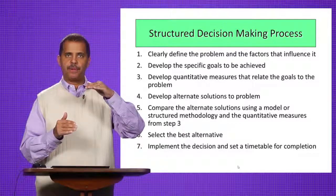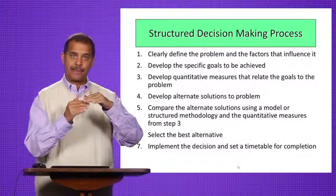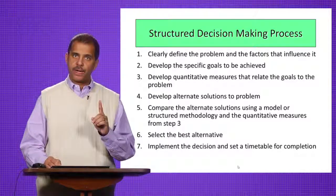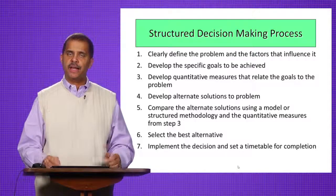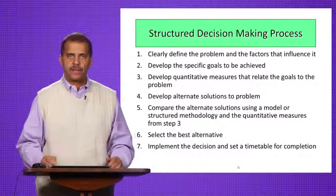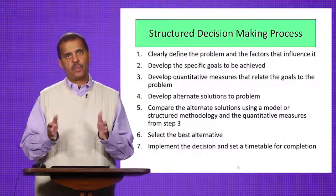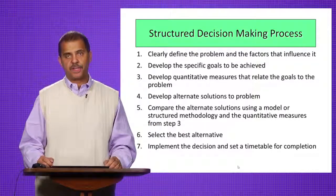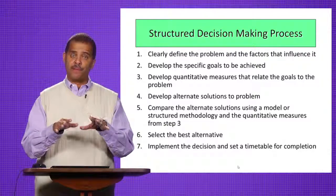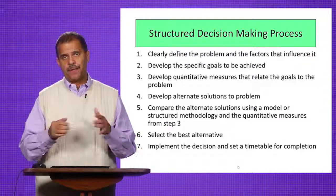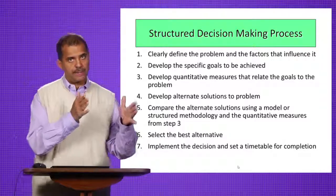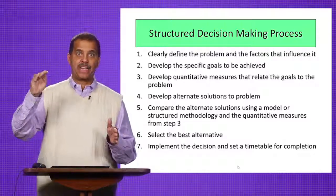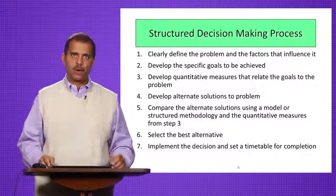Because remember, you've identified the problem. Now you want to either eliminate that problem or get close to eliminating it by setting some goals. Third, develop some quantitative measures that relate to the goals. For example, if our problem is that our patient satisfaction, as measured by a tool like Press Ganey, is at the 75th percentile, we know we have about a 25-percentile gap. So we set a goal — currently at the 75th percentile, our goal may be to achieve patient satisfaction at the 98th percentile. We want to set a quantitative metric.